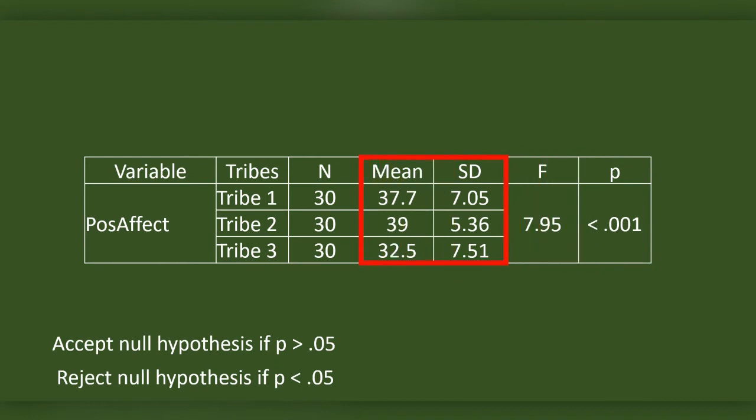Referring to the mean and standard deviation, tribe 2 is the highest in positive affect. Tribe 1 is higher than tribe 3 in positive affect. Altogether, there is a significant difference between the three groups in positive affect.